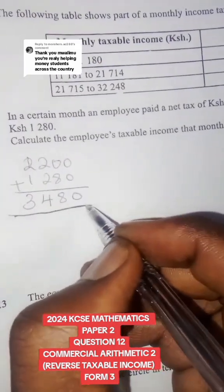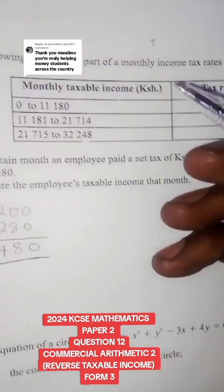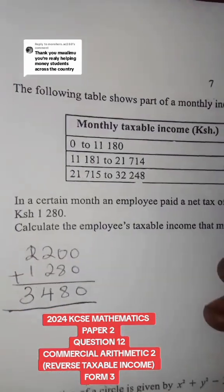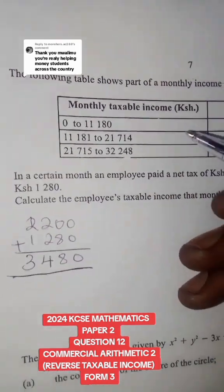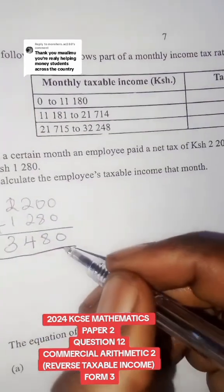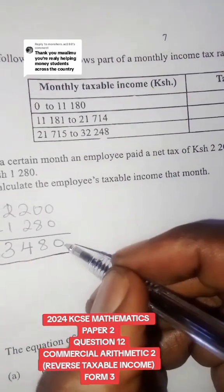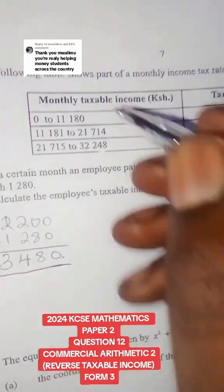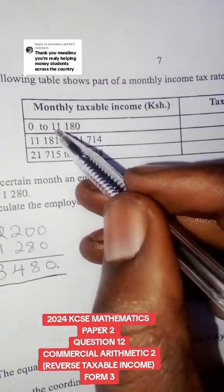We are going to do reverse taxation here. We need to look at which band will give me 3,480 as the tax. So if I look at the first band, which is 11...